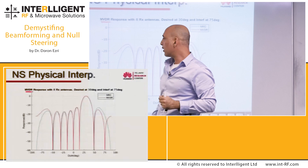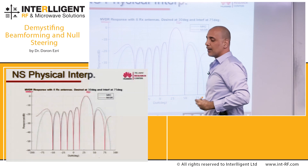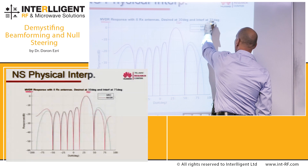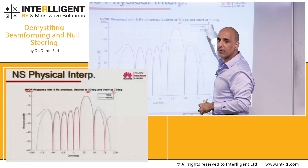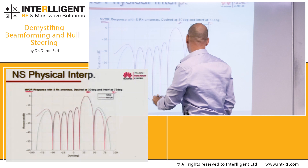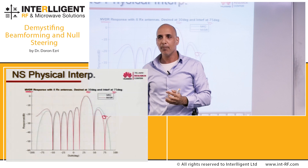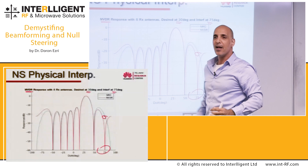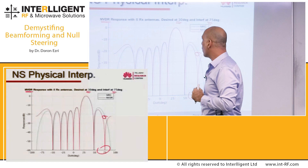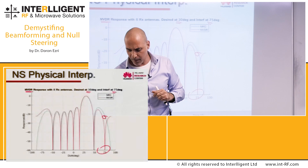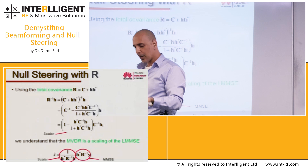Now for the most beautiful thing: what happens with MVDR? Say the desired user is at 30° and the interference comes from 75°. Comparing MRC (which has no knowledge of interference) versus MVDR: at 75° the MRC shows quite significant gain. But MVDR creates a very sharp null pointing precisely at the interference source, minimizing the response at the interference direction — beautiful.